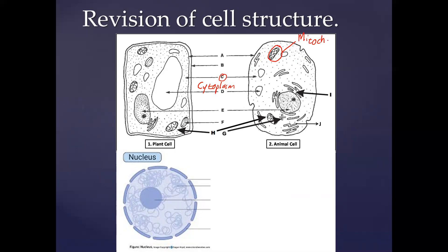The singular is mitochondrion and the plural is mitochondria. We also need to know about the small dots found within the cytoplasm — these are known as ribosomes. We find some of them lying within the cytoplasm, while others are attached onto the endoplasmic reticulum. Where ribosomes are attached onto the endoplasmic reticulum, we call that the rough ER, or the rough endoplasmic reticulum.